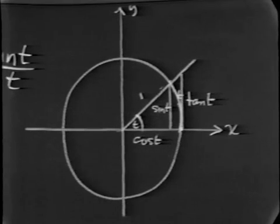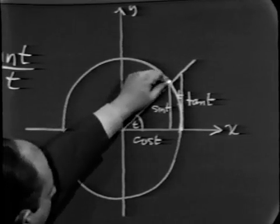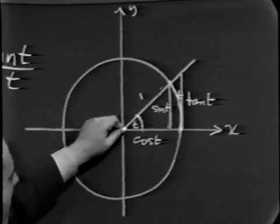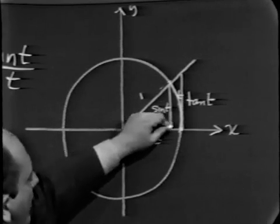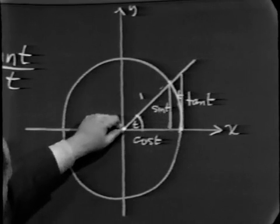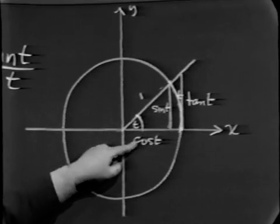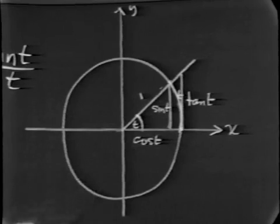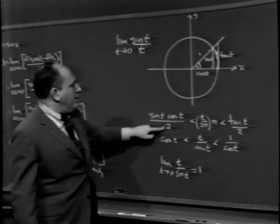Again, without making a big issue over this, notice that this length is sine t. This length is cosine t. So the area of the small triangle is sine t times cosine t over 2. Sine t times cosine t over 2.